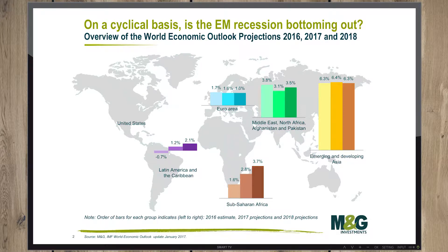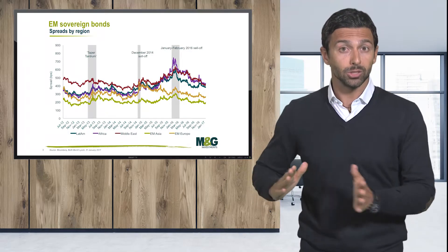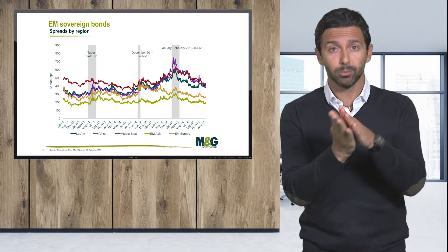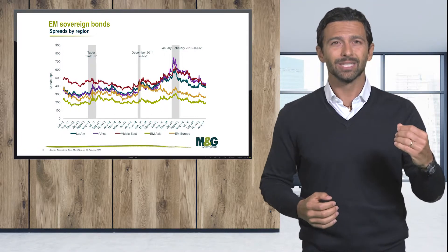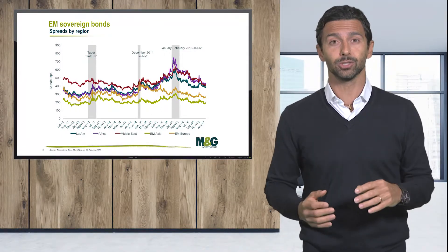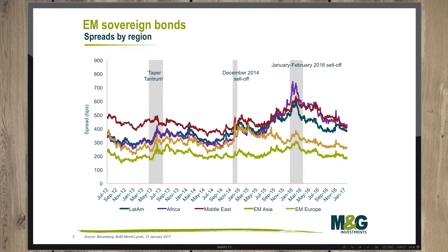If we look at these new slides breaking down the emerging market debt spreads of the different regions, these regions are pretty well split between themselves. You can see, for example, that Eastern Europe or emerging market Asia is paying us much less than Africa or Latin America.